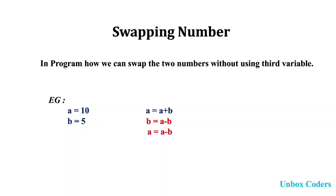For this method, we use addition and subtraction to get the output. We take the input: a is equal to 10 and b is equal to 5. First, a is equal to a plus b, which is 10 plus 5, so a becomes 15. Then b is equal to a minus b, which is 15 minus 5, so b becomes 10.